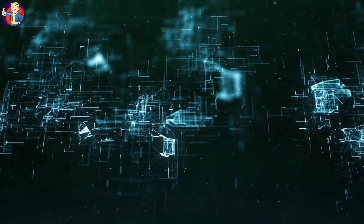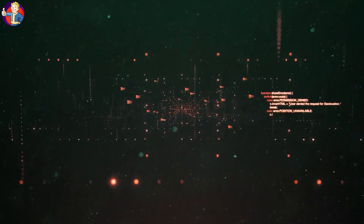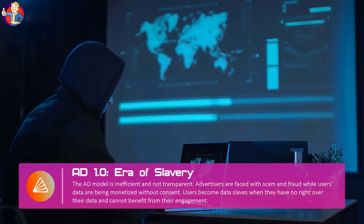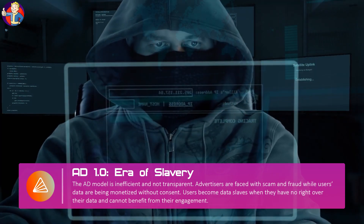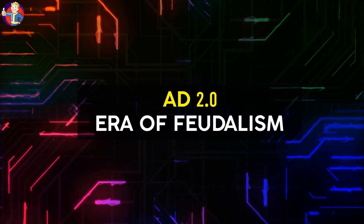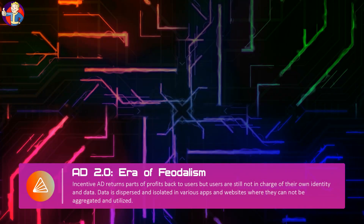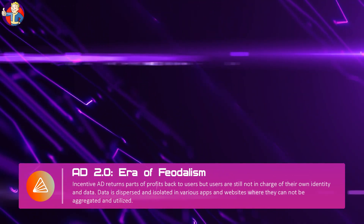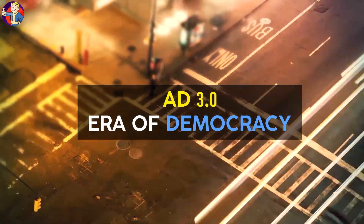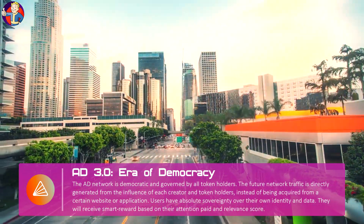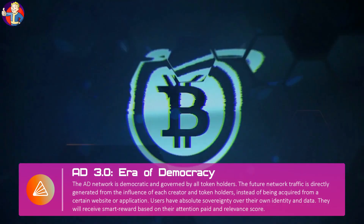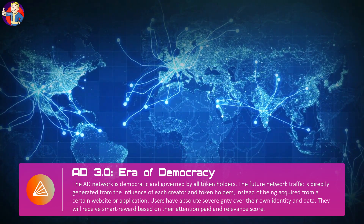The current ad model is inefficient and not transparent. Advertisers are faced with scam and fraud, while users' data are being monetized without consent. Users become data slaves when they have no rights over their data and cannot benefit from their engagement. Incentive-based models return parts of profits back to users, but users are still not in charge of their own identity and data. Data is dispersed and isolated in various apps and websites where it cannot be aggregated and utilized. In AD 3.0, the network is democratic and governed by all token holders. Future network traffic is directly generated from the influence of each creator and token holder, instead of being acquired from a certain website or application. Users have absolute sovereignty over their own identity and data, and will receive smart rewards based on their attention paid and a relevance score.